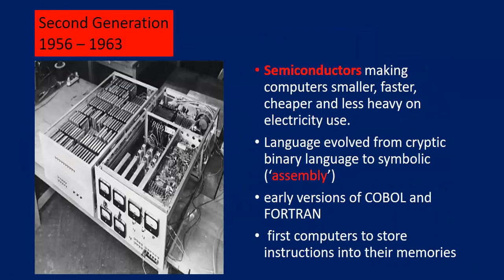The second generation spans 1956 to 1963. The biggest change was that semiconductors started being used in computers, making them smaller, faster, cheaper, and less heavy on electricity. Language evolved during that time — assembly language came, and also COBOL and FORTRAN were introduced. The first computers to store instructions into their memories were the second generation.